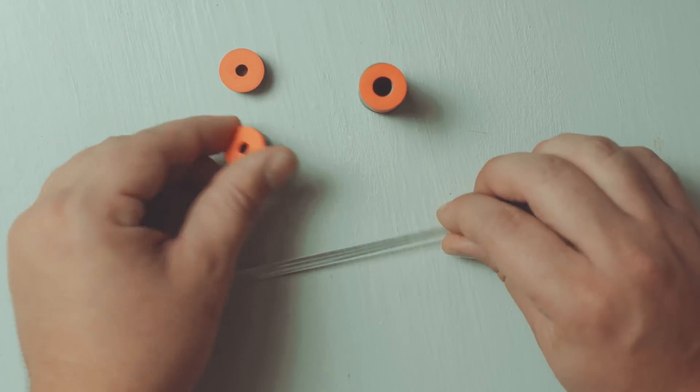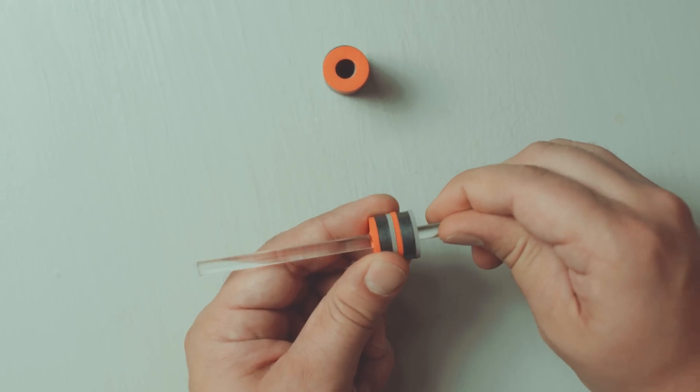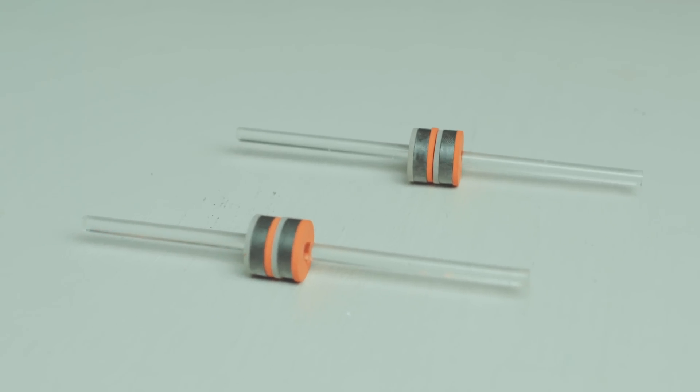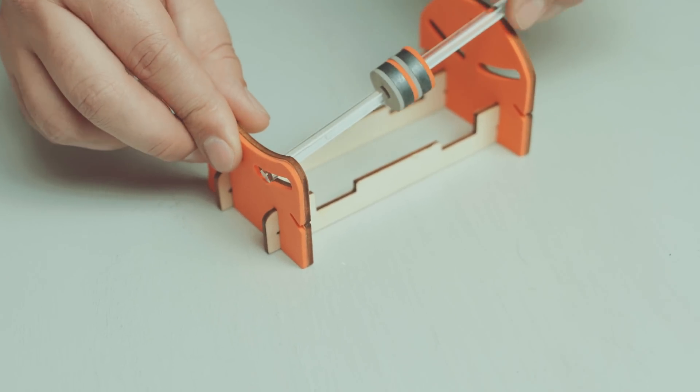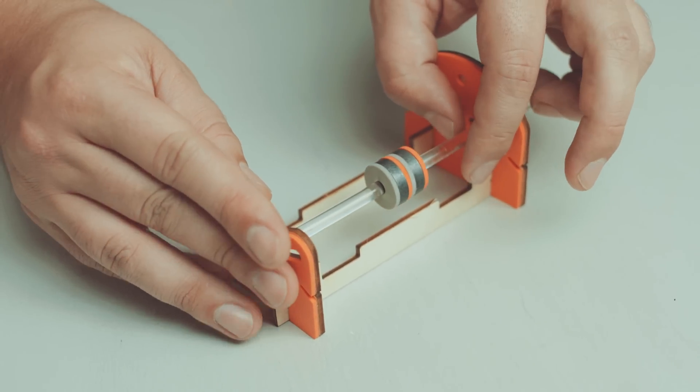Get two of your magnets with the small holes and slide them onto one of your acrylic rods. Make sure both the magnets are faced in the same direction. Now do the same thing with your other acrylic rod and your other two magnets with small holes. Line up your rods so the gray side of the magnets is facing the shorter side of the frame. Slide the rods into the middle of the frame.